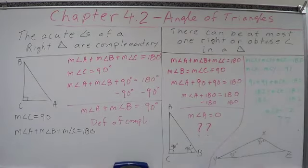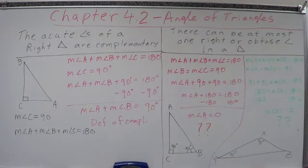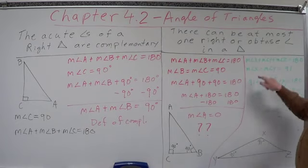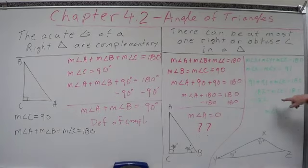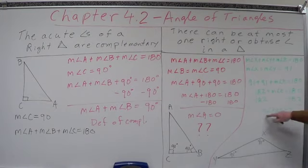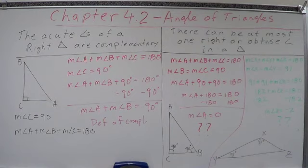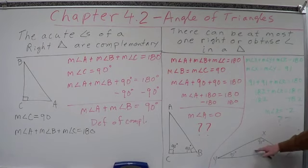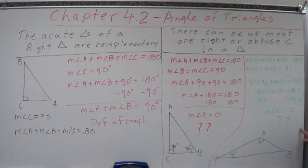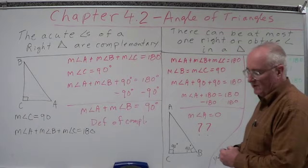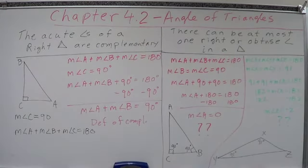Similarly for two obtuse angles: let's try two very small obtuse angles of 91 degrees each. The measure of angle X plus the measure of angle Y plus the measure of angle Z equals 180. Substituting 91 for both X and Y: 91 plus 91 plus angle Z equals 180, so 182 plus angle Z equals 180. Subtracting 182 from both sides gives the measure of angle Z equals negative 2 — which doesn't make sense for a triangle. So you cannot have two obtuse angles in a triangle. These are common-sense results that will keep you out of trouble. Welcome to the Angles of Triangles — we'll be applying these principles and theorems to triangles for much of the rest of the year.